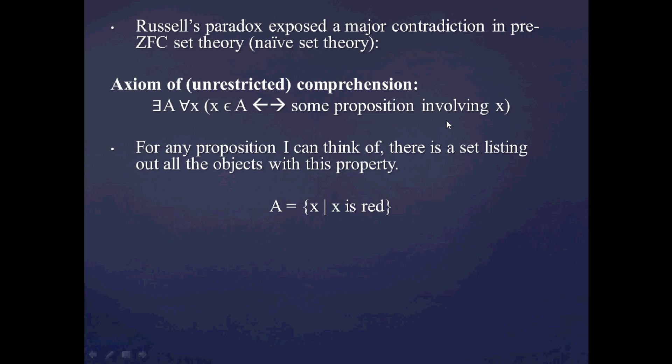And this doesn't seem completely ridiculous prima facie. For example, this axiom would guarantee the existence of a set A such that all the objects of the set A, which I'll call x, have the property that x is red. So it's just saying that if I can conceive of this proposition x is red, then I should be able to list out all the elements x that satisfy that proposition or that make that proposition true.